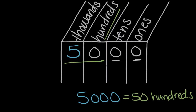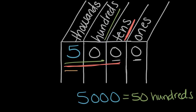We weren't asked about tens, but we could look here and figure it out. Tens we would say is five hundred tens — we'd read up through the tens place, and tens have one zero implied. And if we went all the way to the end, we could say this number is equal to five thousand ones. So five thousands, fifty hundreds, five hundred tens, or five thousand ones are all equivalent. But the one we were asked about was hundreds, so five thousands equals fifty hundreds.